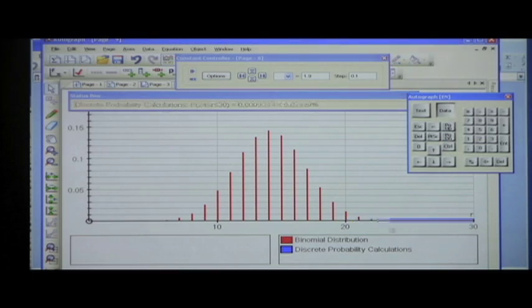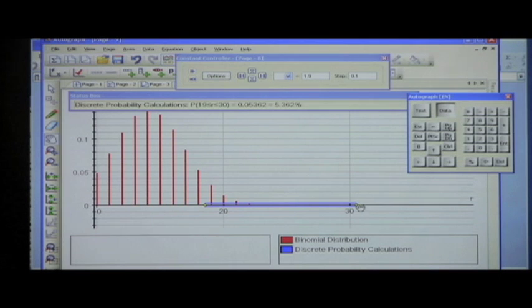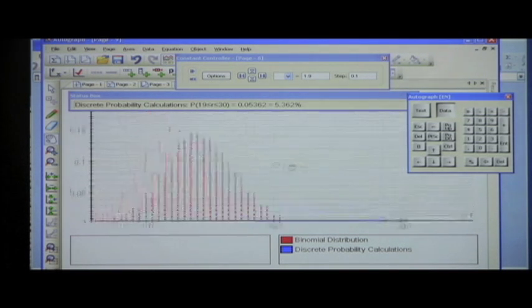But the great thing is this is a dynamic environment, so I can move this around and have a look at all the other possibilities. You can even look at the end of the distribution, because it doesn't go further than 30. Only 30 people sat the thing, so you could have 30 people passing it.